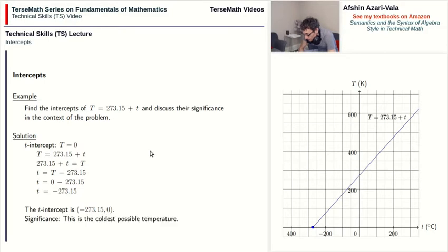In terms of its significance, this is the coldest possible temperature. The ordinary temperature is a measure of how fast the molecules of a given gas move around, and the coldest possible temperature is when these molecules stop. And that happens at negative 273.15 degrees Celsius or zero Kelvins. This was the lowercase t intercept and it appears here. It actually is the end of the domain for this problem.